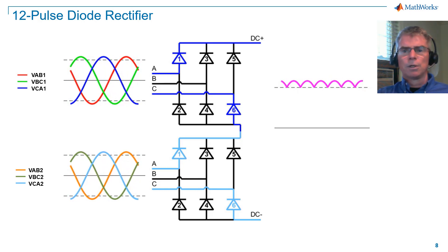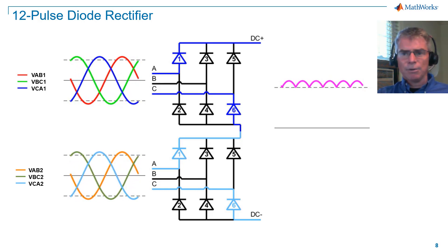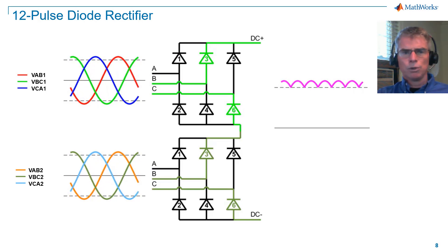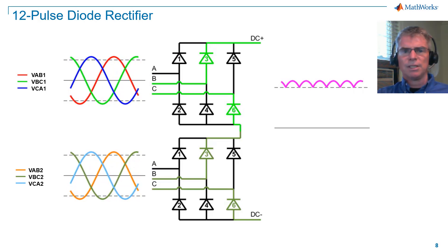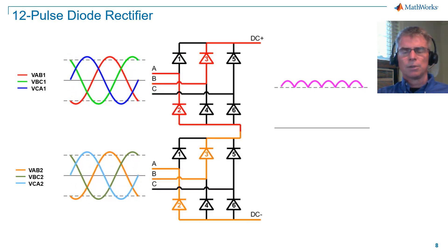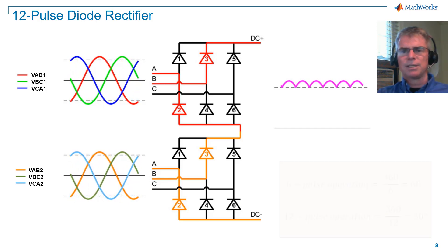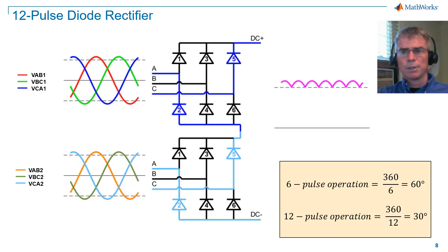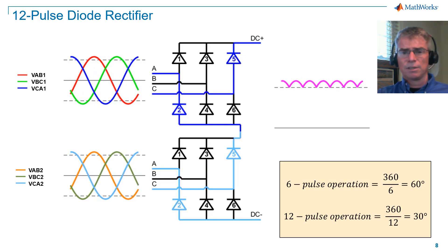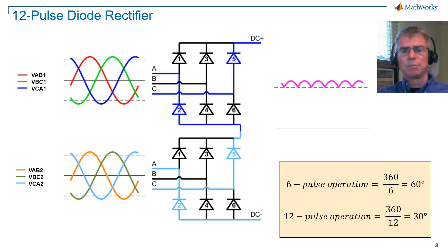If we can have the upper and lower rectifiers switching out of sequence, we should be able to obtain lower ripple on the DC voltage. So six-pulse operation switches at 60 degrees, 360 divided by 6. With a 12-pulse device, we want to switch at 30 degrees, 360 divided by 12.